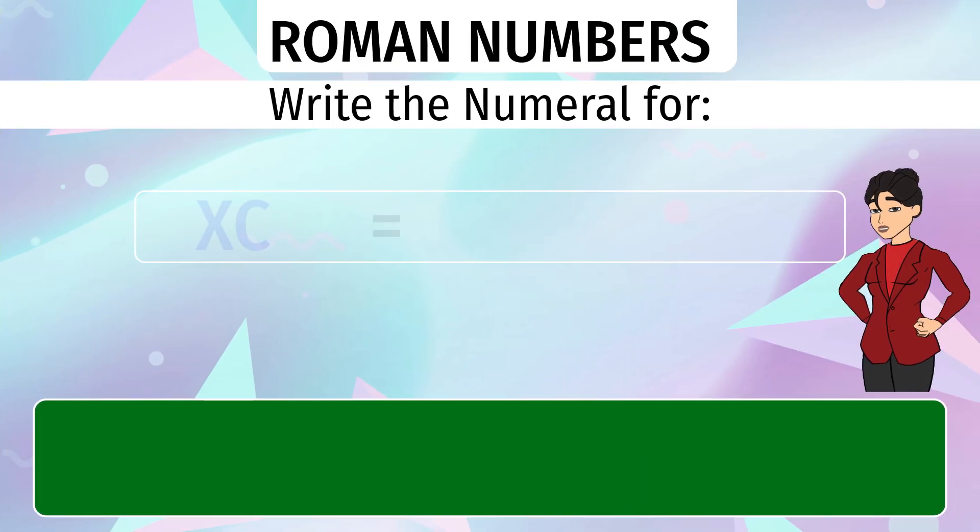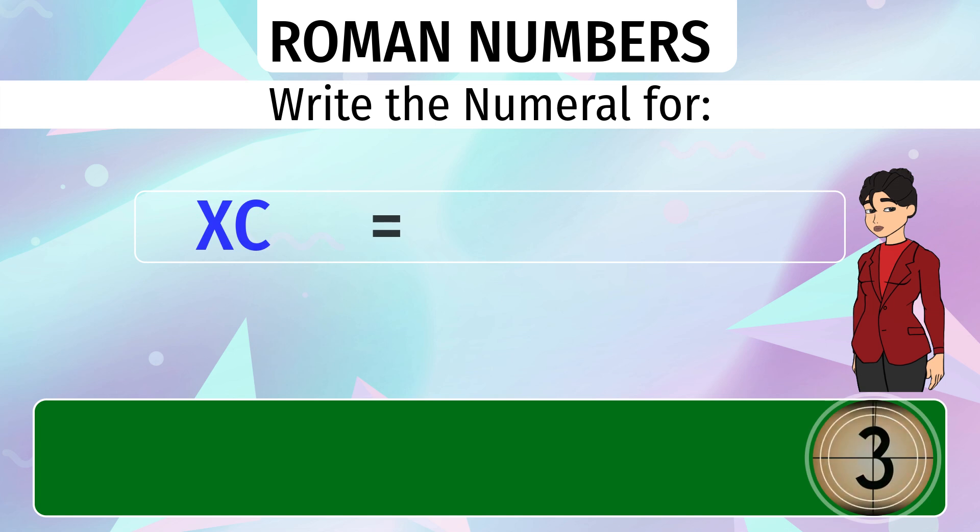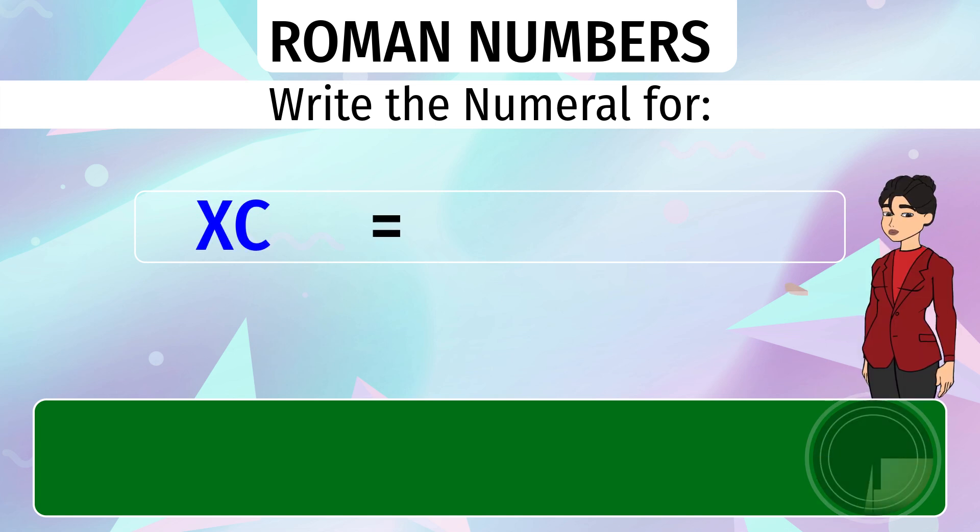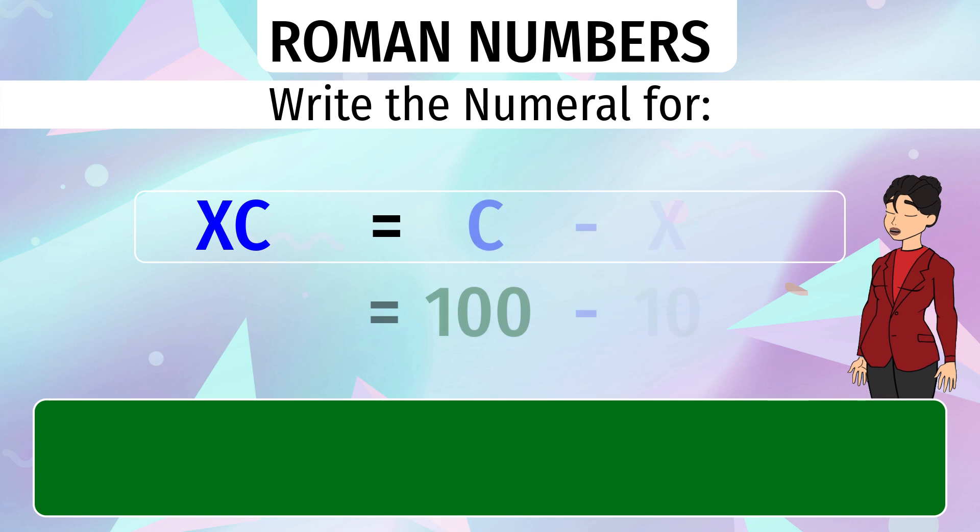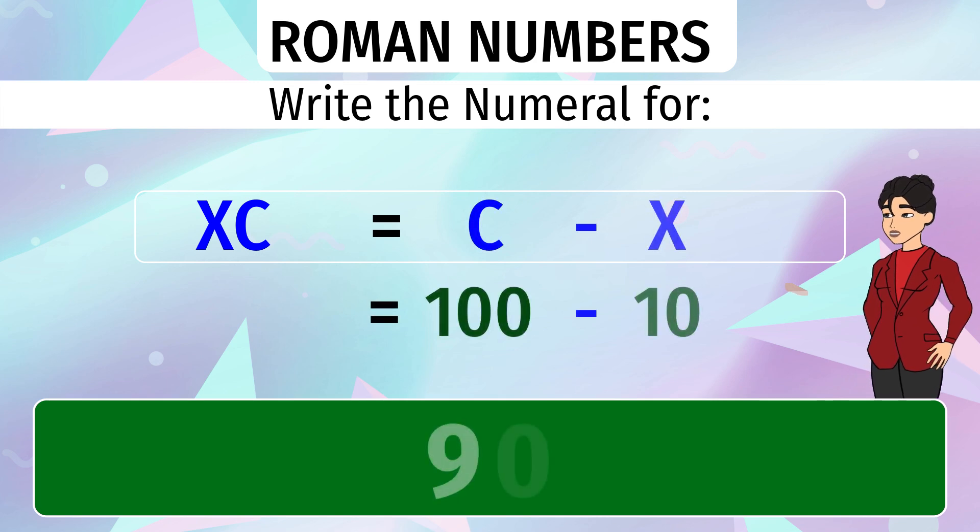What number does XC represent? A smaller X before the bigger number C means X will get subtracted from C. We get 90.